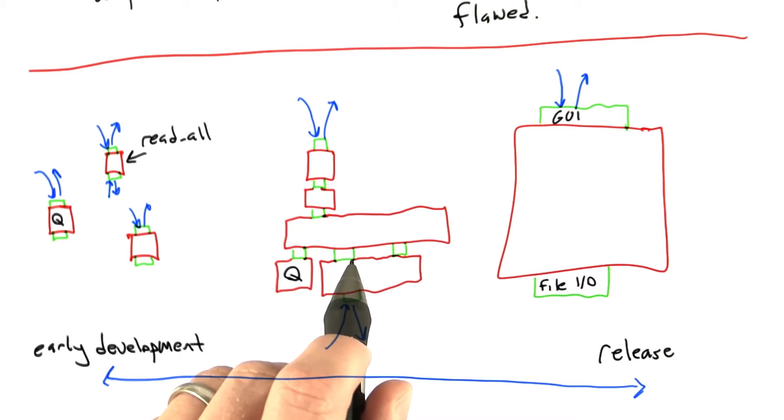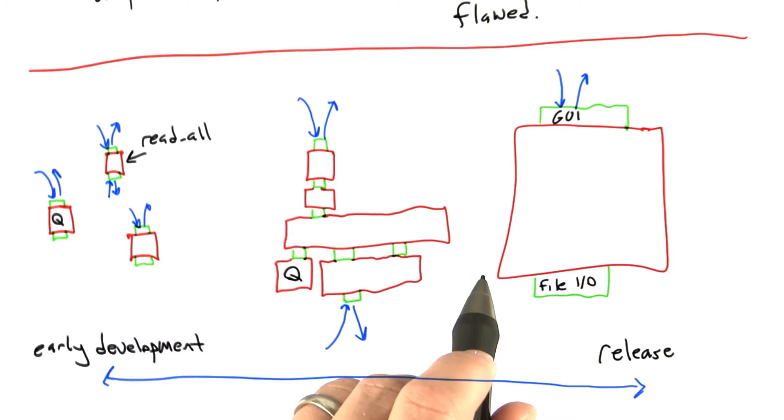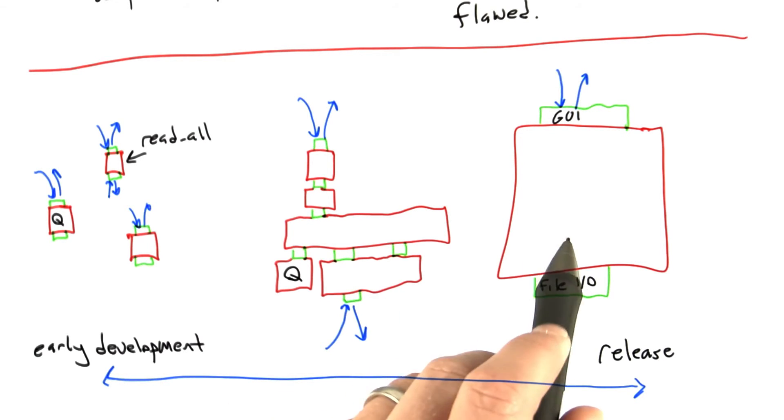If we keep doing this not just over weeks but over years, what we'll end up with is a random tester and a system that have gone through this coevolution process where they've both become much stronger. That is to say, we've evolved an extremely sophisticated random tester and we've also evolved a system that is robust with respect to the kind of faults that can be triggered by that random tester.